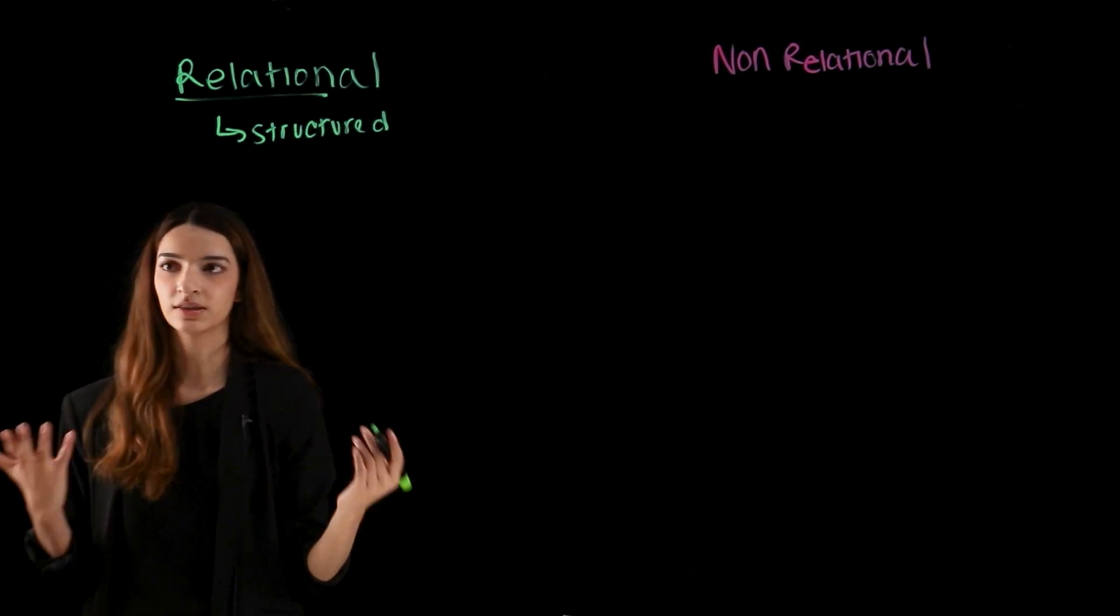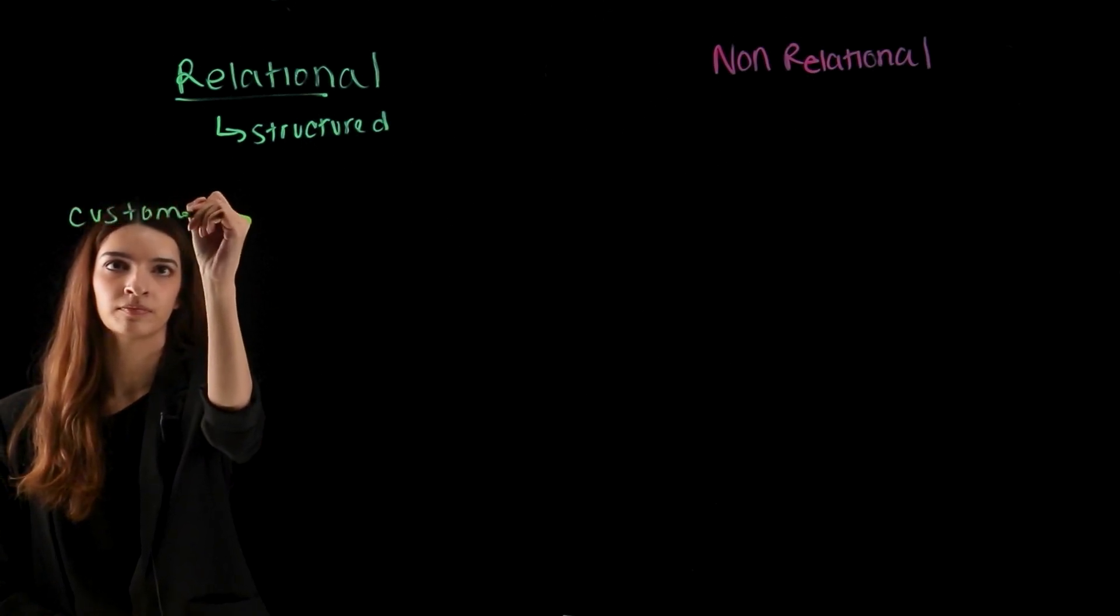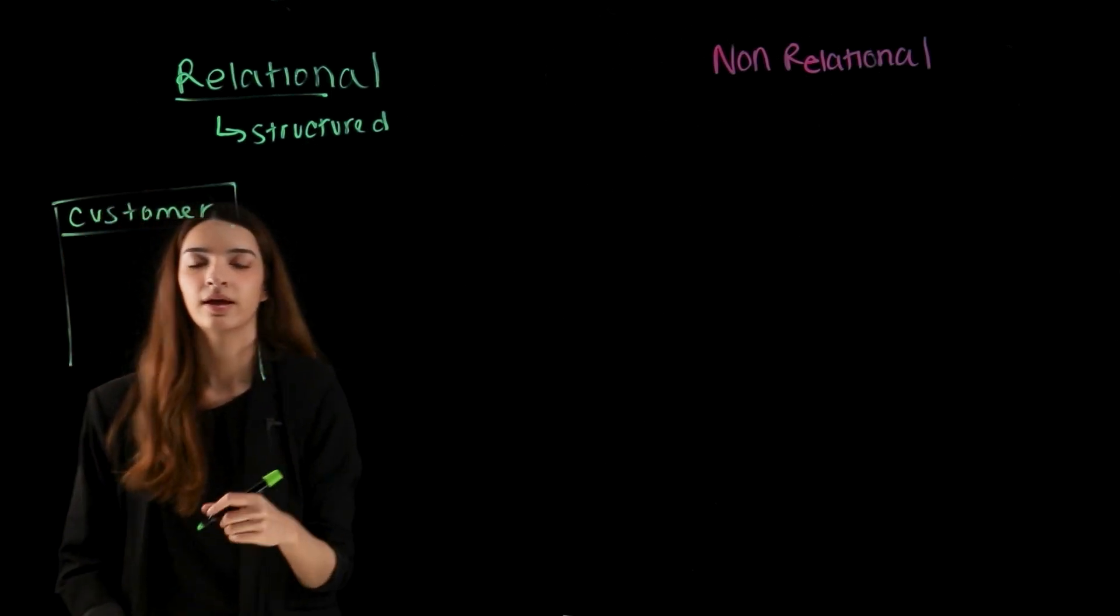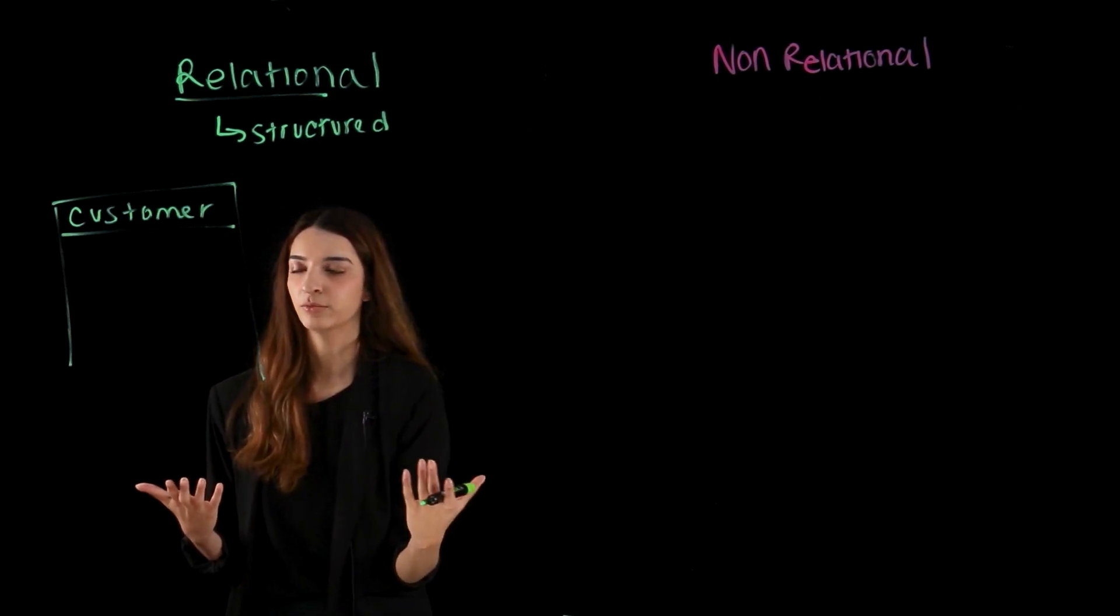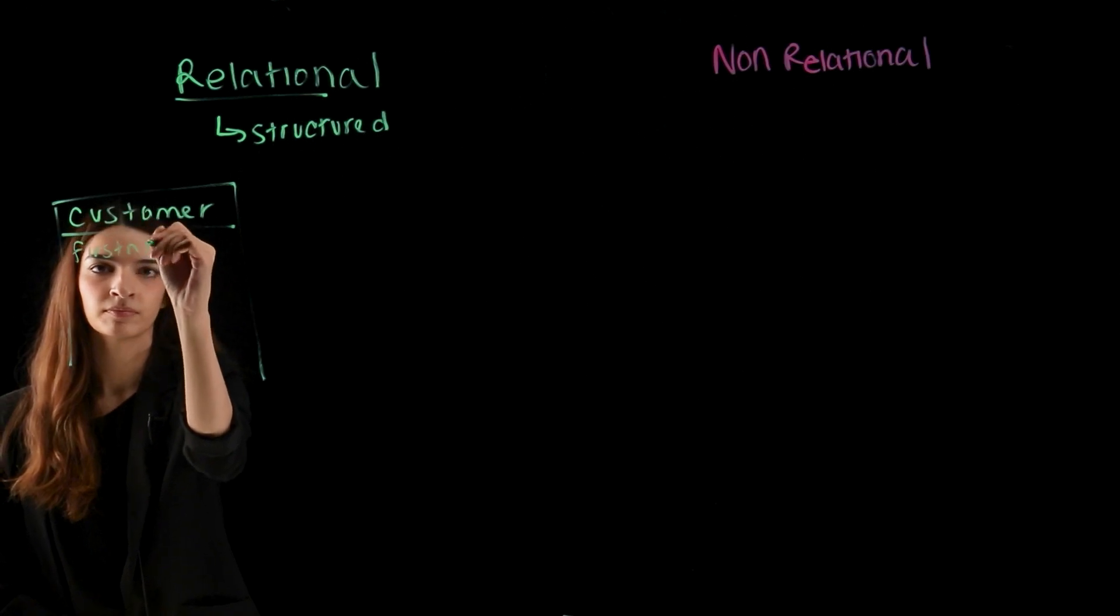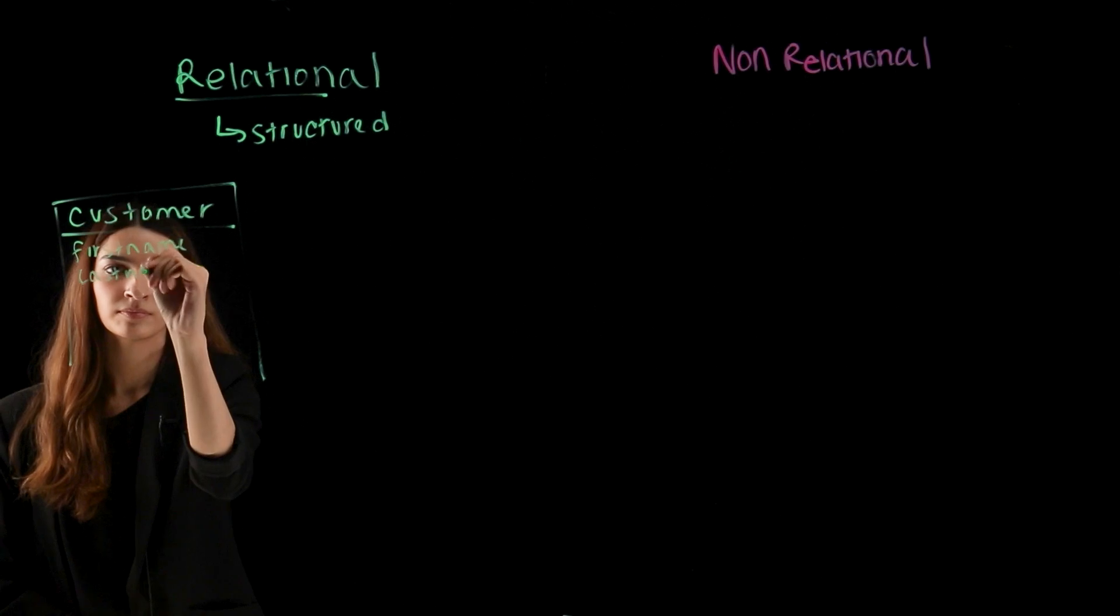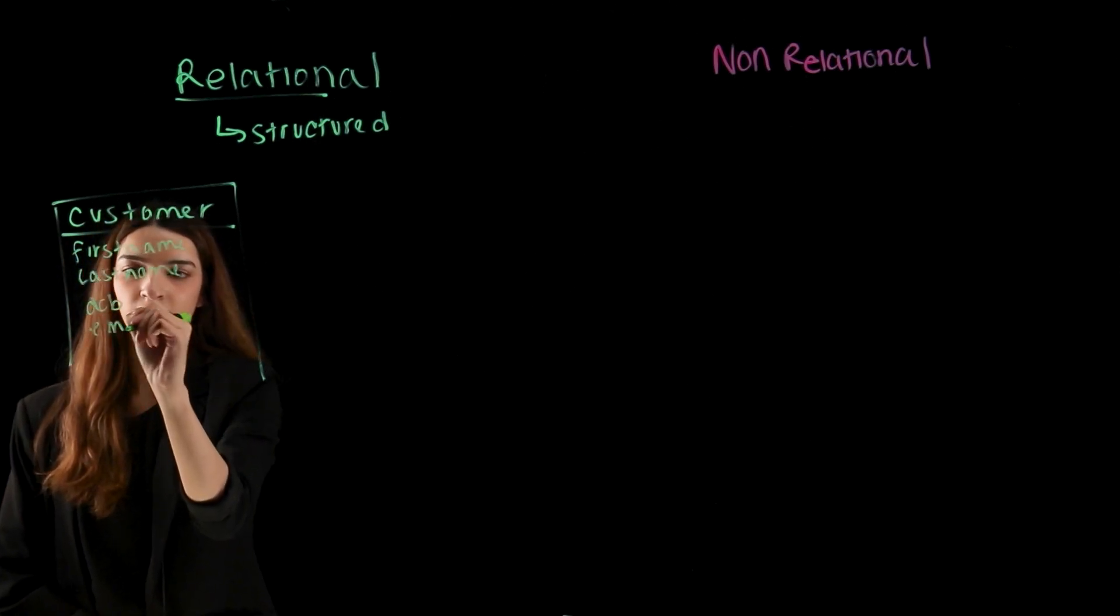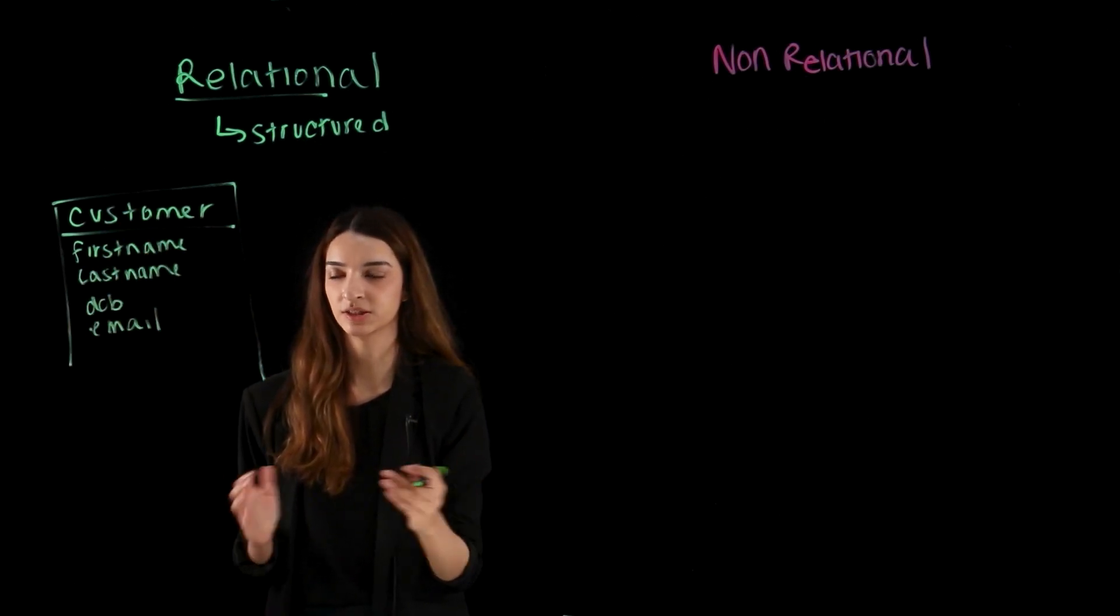So let's start with one table. We have our customer. So each table revolves around a single entity. And with our customer there is a lot of different information that we would want to know about them, right? We'd want to know what their first name is, their last name, maybe their date of birth, their email, and whatever other information would be relevant to know about the customer.